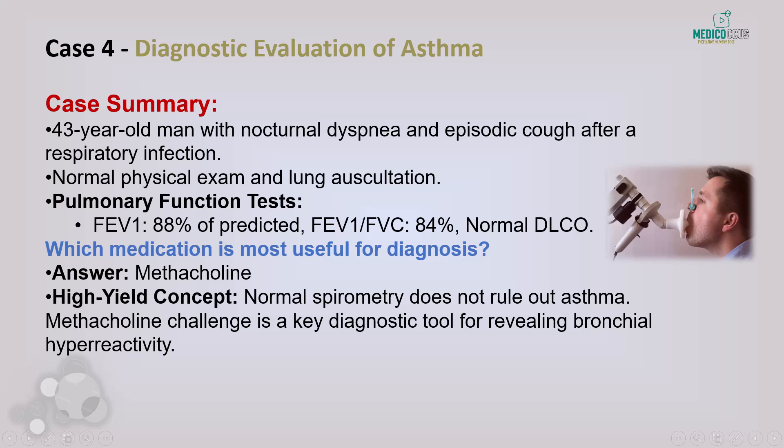Case 4: A 43-year-old man with occasional nocturnal dyspnea and cough after a severe respiratory infection. Pulmonary function tests are normal, but history suggests asthma. This is where the methacholine challenge test comes in. Methacholine is a muscarinic cholinergic agonist that induces bronchoconstriction; in patients with asthma, it causes a greater-than-normal decline in lung function. The methacholine challenge is the definitive diagnostic tool when asthma is suspected but lung function tests are normal, revealing bronchial hyper-responsiveness.